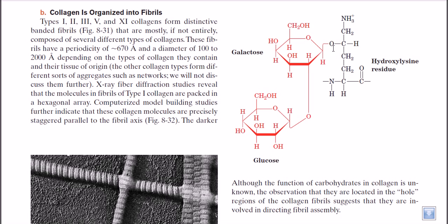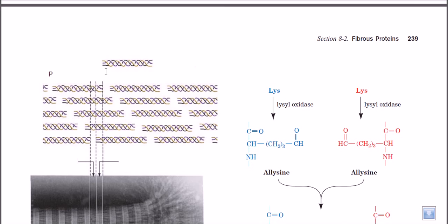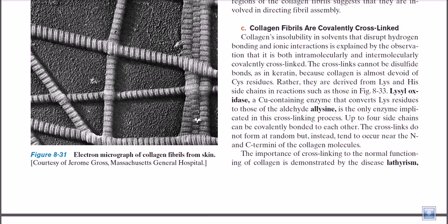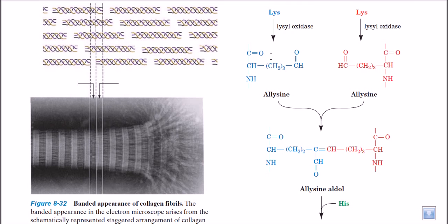An electron micrograph of a collagen fiber from skin shows how tight and strong the structures actually are — it really looks like a rope. This is a really tight and compact arrangement. Looking at how these fibers arrange themselves to make this coil structure, the helix interacts with each other to make a very complex structure. Lysine residues provide the platform for making a really strong structure of collagen.